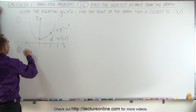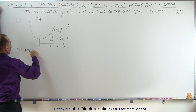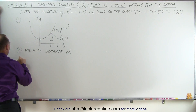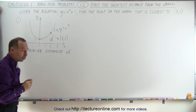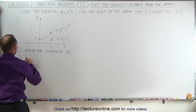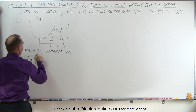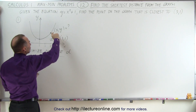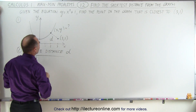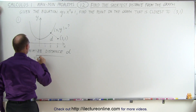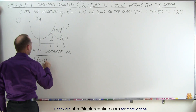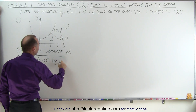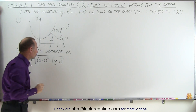So step 2, we're trying to minimize the distance. Now we need an equation — we're going to use the distance formula. The distance formula tells us that d is equal to the square root of the sum of the differences between the x values and y values of the two points: x minus 3 squared plus y minus 1 squared.